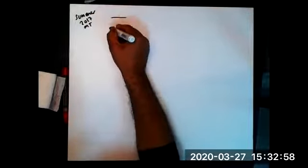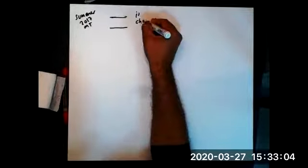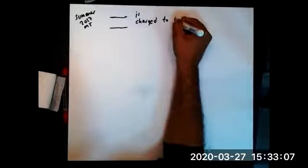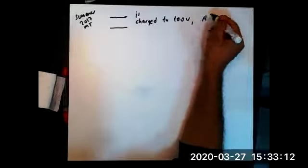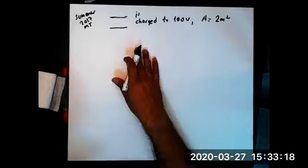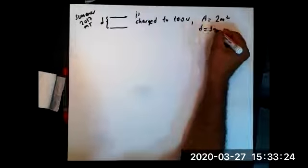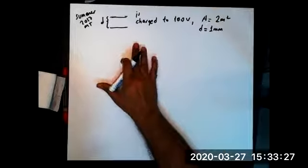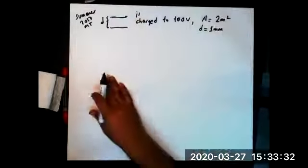This is a question from the midterm exam of summer 2017. We have a capacitor, a parallel plate capacitor. It is charged to 100 volts. The surface area of one of the plates is given in the problem as 2 meters squared, and the distance between the plates is given as 1 millimeter.